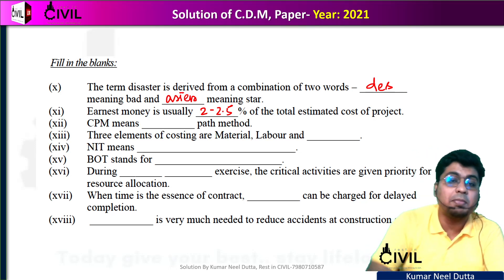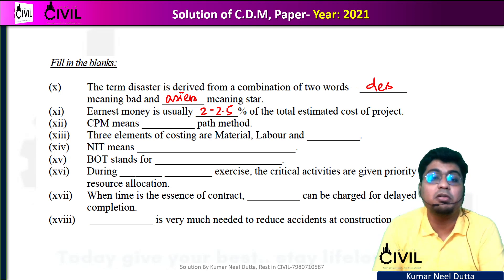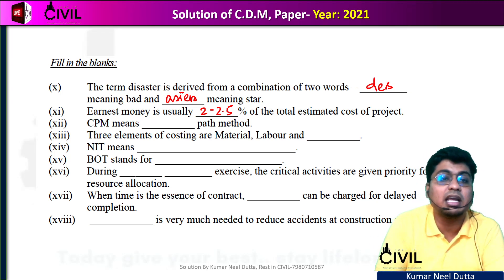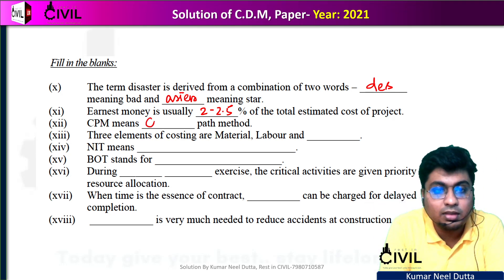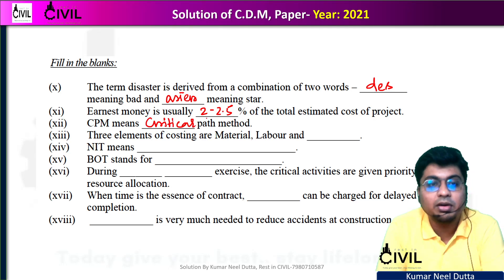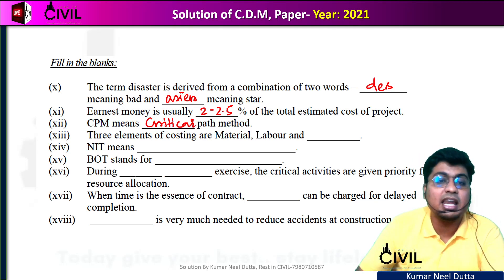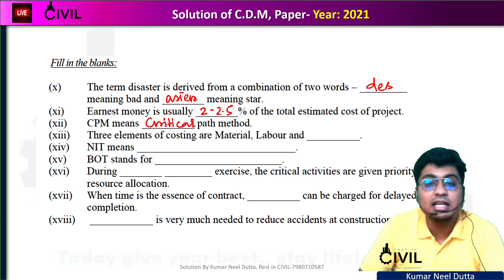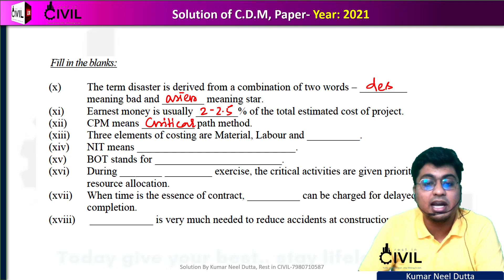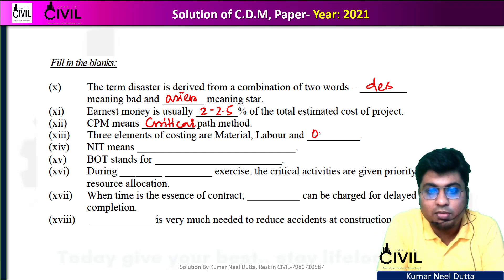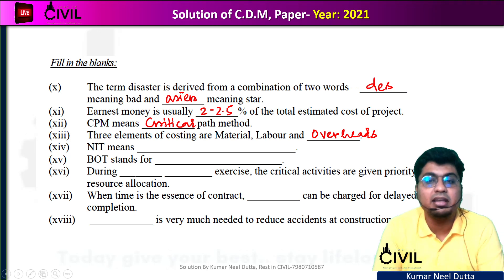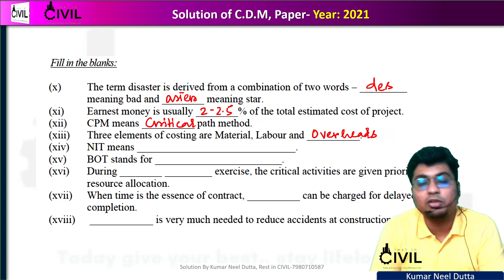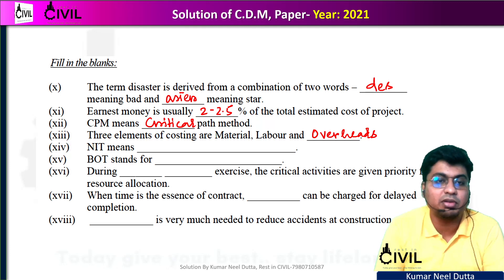CPM stands for Critical Path Method. The next fill-in-the-blank answer is overheads. Overheads means you will pay average salary — staff salary, engineers' pay, and associated costs. So you will pay the overhead costs.